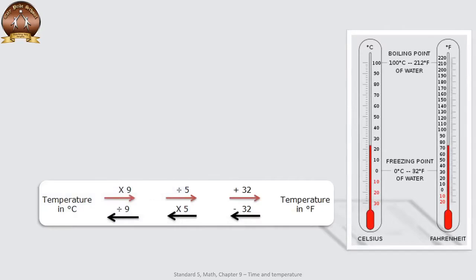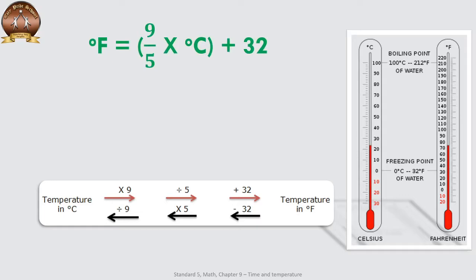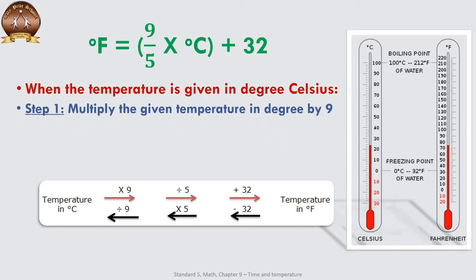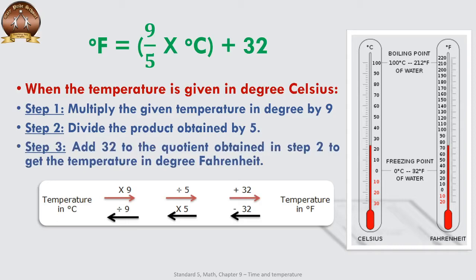There is a small table on screen showing direct conversions between Celsius and Fahrenheit. When degrees Celsius is given and we need to convert to Fahrenheit, the formula is: (9/5) × °C + 32. Step 1 — multiply the given temperature by 9. Step 2 — divide the product by 5. Step 3 — add 32 to the quotient to get the temperature in degrees Fahrenheit.